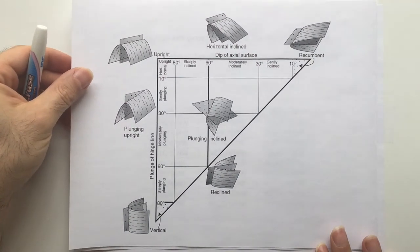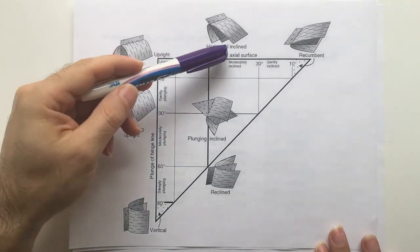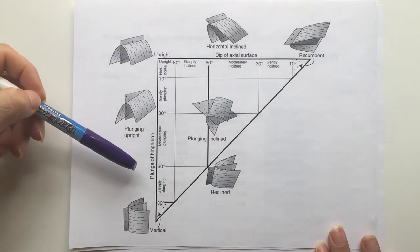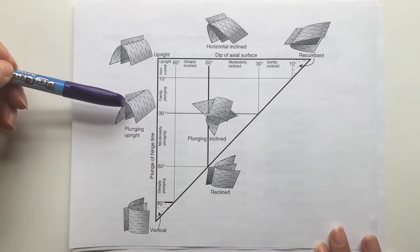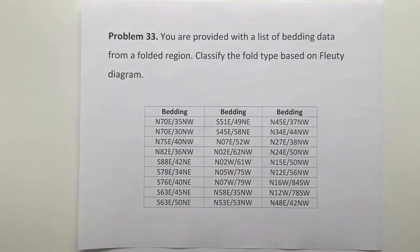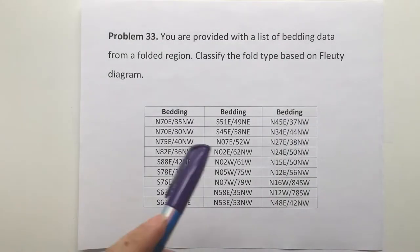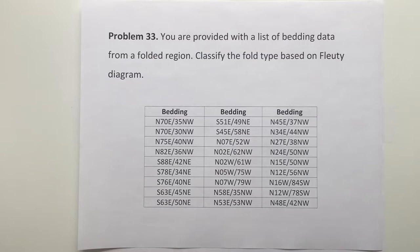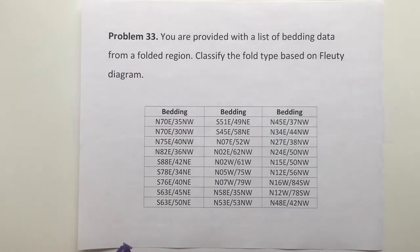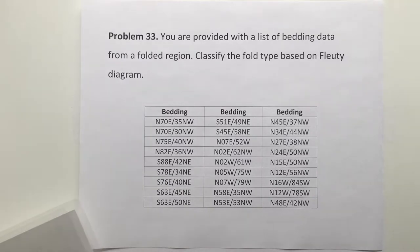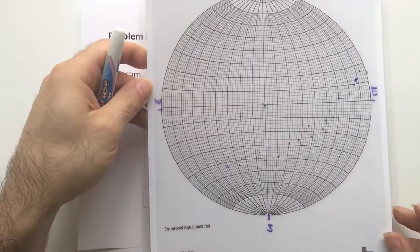What we need is the dip of the axial plane and the plunge of the hinge line or fold axis. When you have a lot of data to plot on the stereonet, it's better to plot the poles because it gives you more space. I've already plotted the poles of the beddings here.